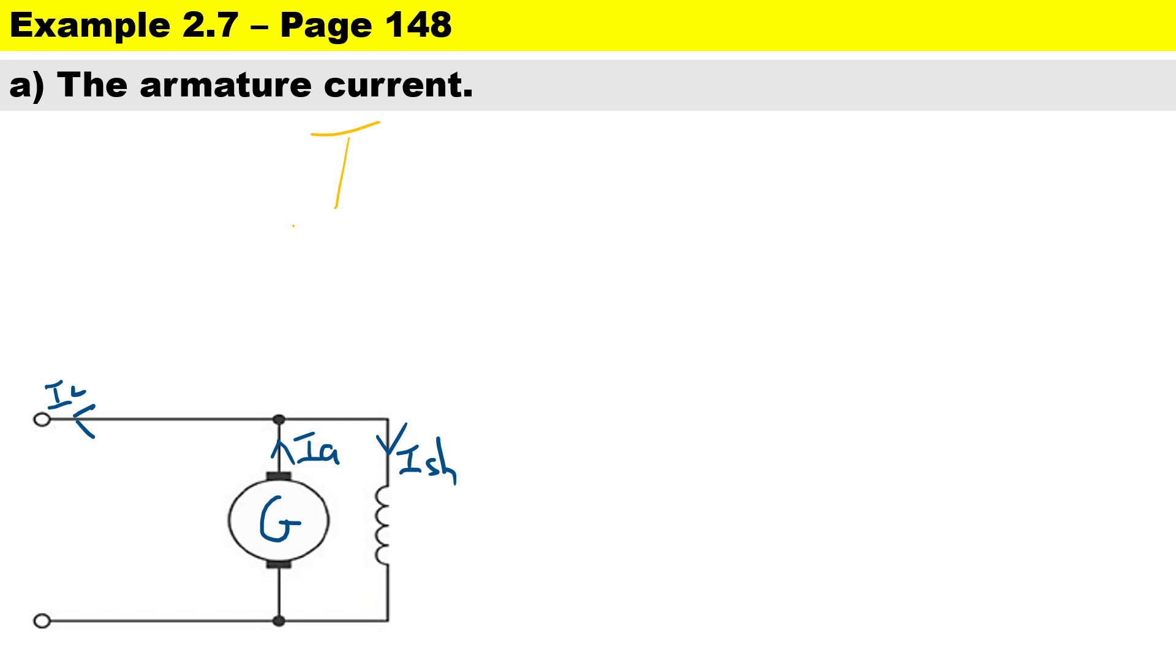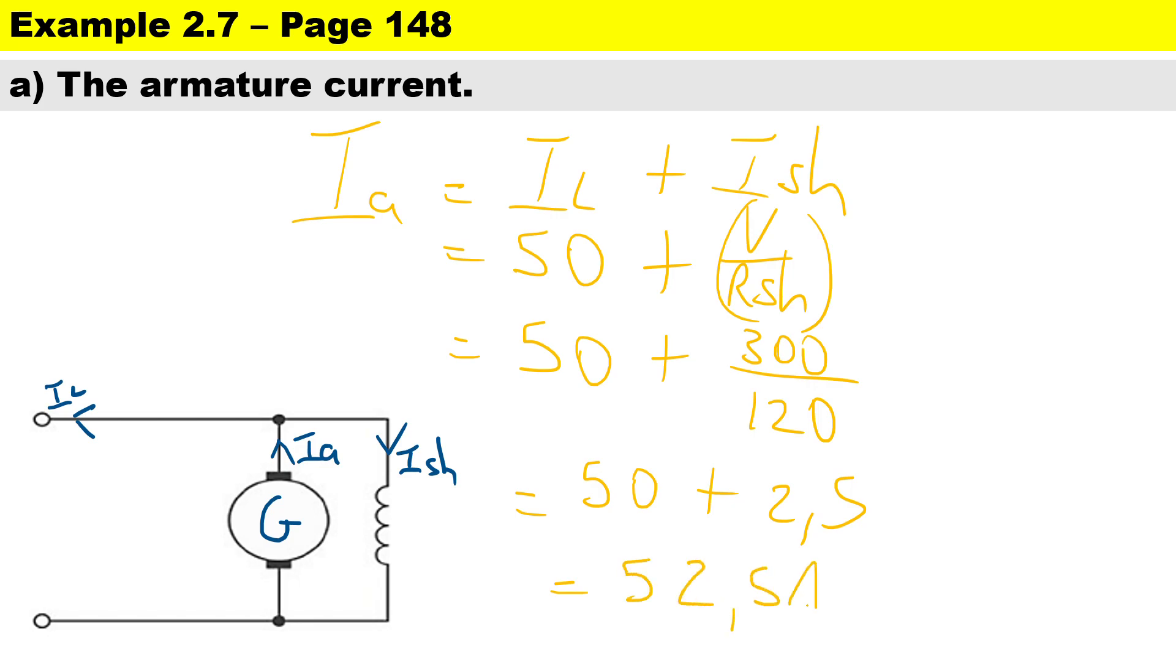The first question says calculate the armature current. So to calculate the armature current Ia, it's going to be IL plus I shunt. The supply current is 50 amperes and to calculate I shunt it's going to be V over R shunt. So we need to substitute there the terminal voltage is 300 volts and the shunt resistance, which is the bigger resistance, is 120 ohms.